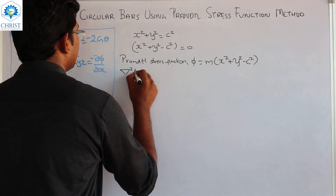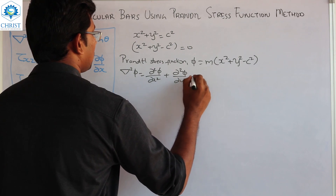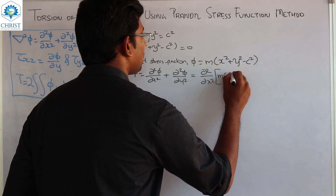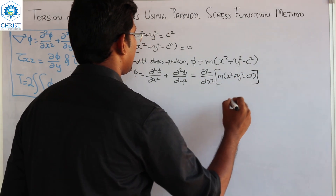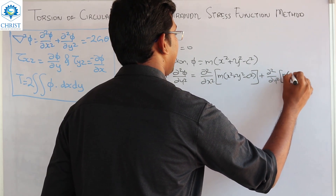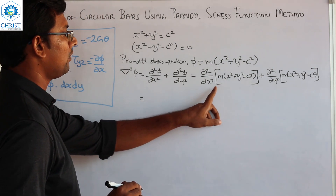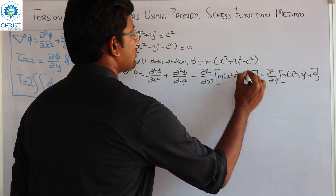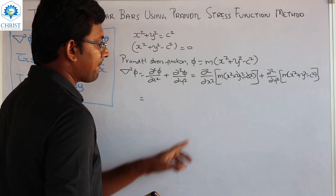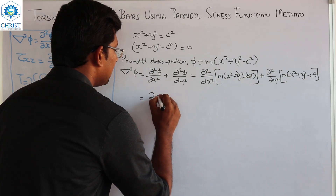Del² φ is equal to ∂²φ/∂x² + ∂²φ/∂y², which is equal to ∂²/∂x² of m(x² + y² − c²) plus ∂²/∂y² of m(x² + y² − c²). Differentiating with respect to x, ∂²/∂x² gives m times 2, so ∂²φ/∂x² = 2m.